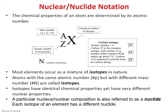A nuclide is an atom with a particular nuclear composition, meaning it has a certain number of neutrons, protons, or collectively nucleons. The major characteristics of an atom depend on its atomic number, which is the number of protons present in the atom, denoted by Z. In the chemical notation, X represents the chemical symbol of an element — for example, carbon is written as C — and Z is the atomic number, which equals six for carbon.